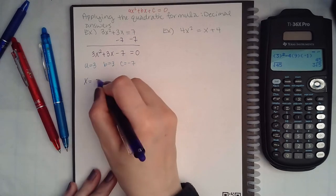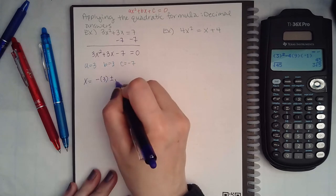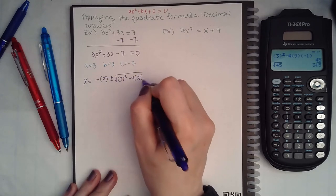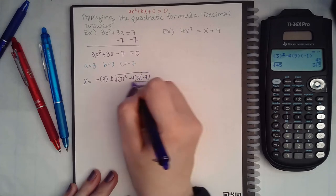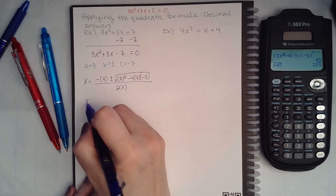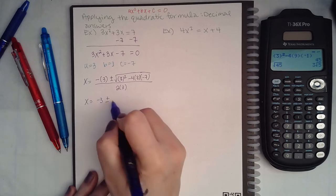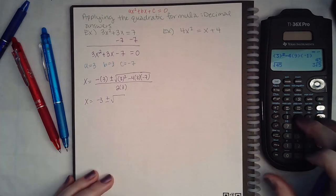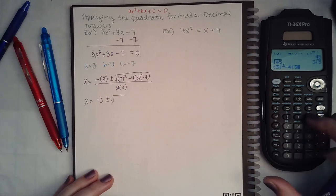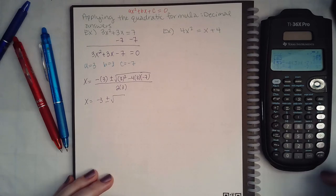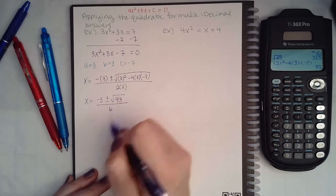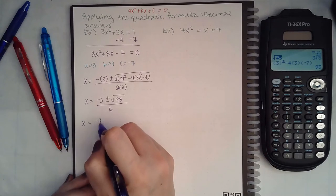Here a is positive 3, b is positive 3, and c is negative 7. So when I plug it into the formula, I get negative 3 plus or minus the square root of 3 squared minus 4 times 3 times negative 7, all over 2 times 3.